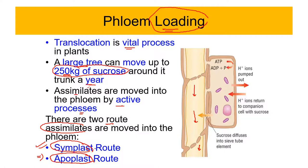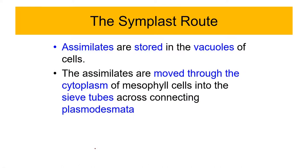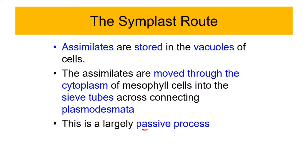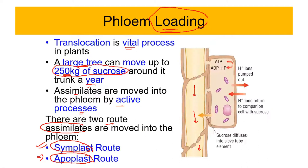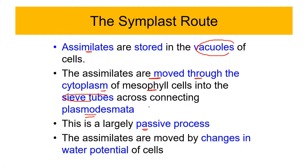The symplast route is generally a passive process. Assimilates move through the cytoplasm and cells are connected to each other through plasmodesmata, so they can be transported from the cytoplasm of one cell to the cytoplasm of the next. Assimilates are generally stored in the vacuoles of the cell and moved to the cytoplasm of mesophyll cells into the sieve tubes across the connecting plasmodesmata. This movement driven by changes in water potential is largely passive.